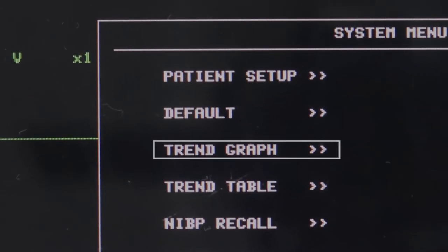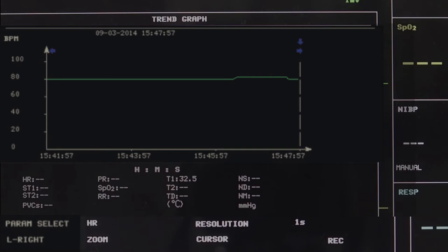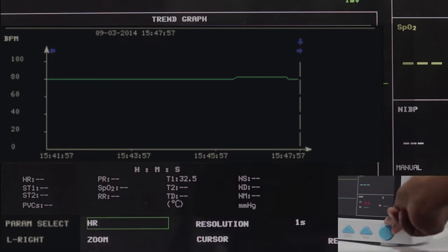Trend Graph: The latest 1 hour trend is displayed every 1 or 5 seconds and the latest 480 hour trend is displayed every 1, 5 or 10 minutes. You can pick a parameter to trend using parameter select below the graph.